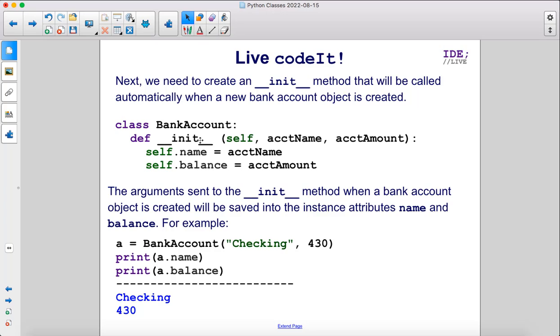Here we have def __init__, we have two arguments being sent to these parameters, name and balance. The arguments sent to the __init__ method when a bank account object is created will be saved into the instance attributes name and balance.